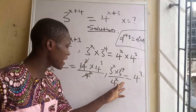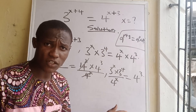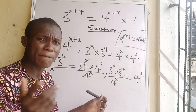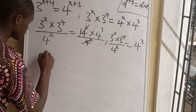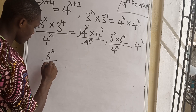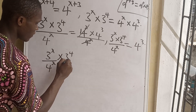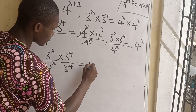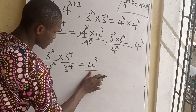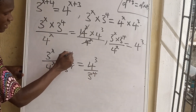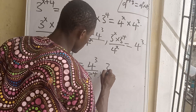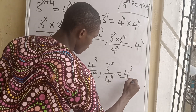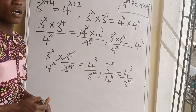We want x to stand on its own, so we divide both sides again by 3^4. This gives us 3^x over 4^x equals 4^3 over 3^4, since the 3^4 terms cancel on the left side.